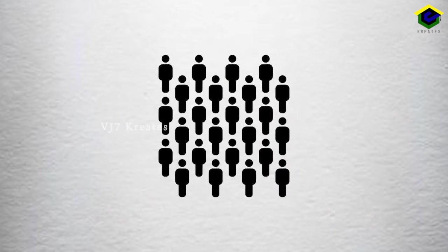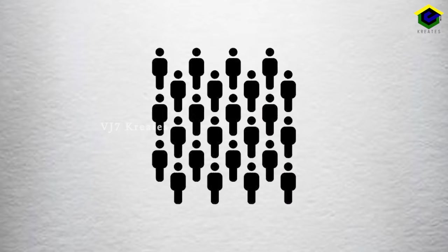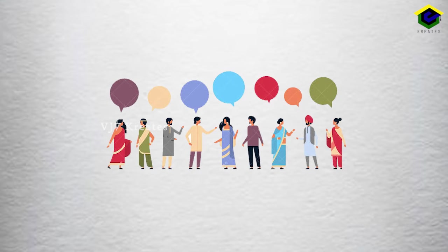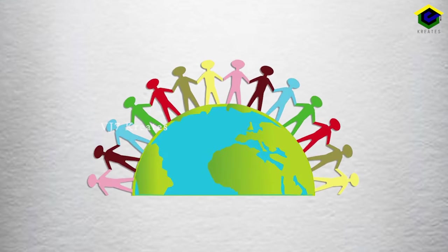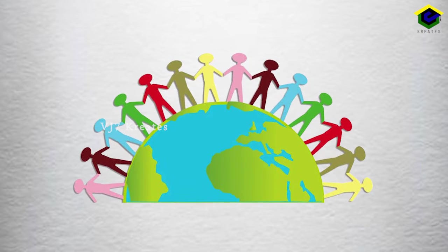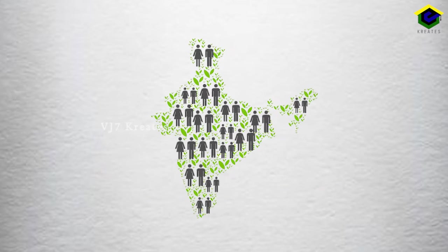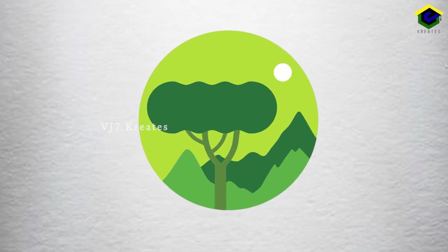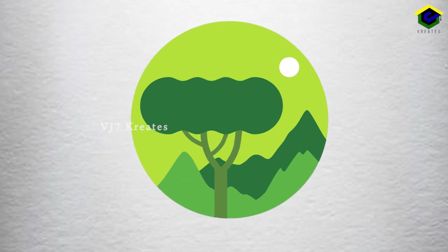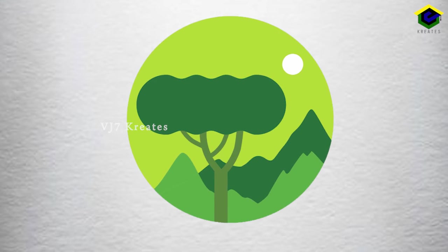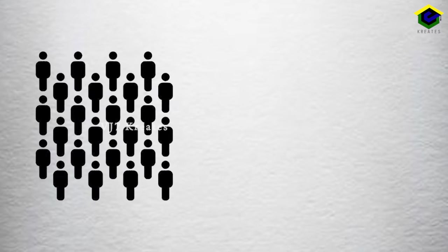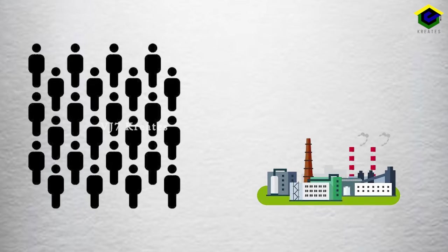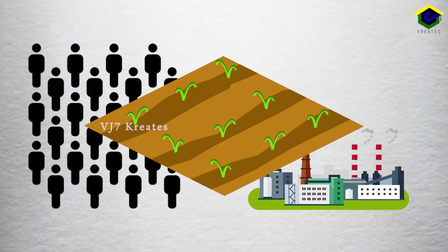Today we are going to learn about distribution and density of population. The term population distribution refers to the way the people are spaced over the earth's surface. The distribution of population in India is quite uneven because of the vast variation in the availability of resources. Population is mostly concentrated in the regions of industrial centers and the good agricultural lands.